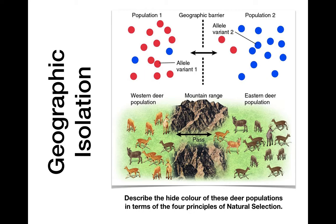In the original population there was variation in coat color — some dark, some light, some in between. Overproduction means too many deer for all to survive; there are lots of predators and they need to camouflage better. The adaptation is that the light brown color was better on one side and dark brown on the other — maybe different tree cover and bark color. Modification means the ones better suited to survive pass on their genes, so mostly light brown ones survived on one side and dark brown on the other.